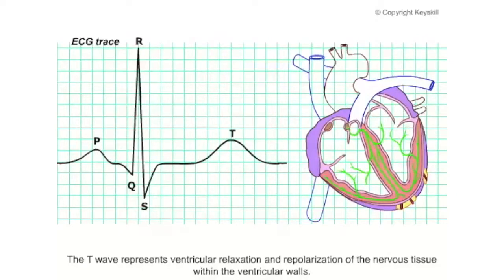The T wave represents ventricular relaxation and repolarization of the nervous tissue within the ventricular walls.